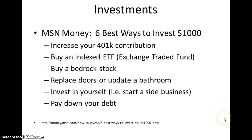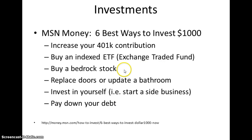Another question that can be answered with algebra is looking at investments. MSN Money gives six best ways to invest: contributing to your retirement, contributing to an exchange-traded fund (which is similar to a mutual fund), buying a bedrock stock with very low risk, updating your home — particularly doors and bathrooms — investing in yourself by starting a side business, or paying down your debt. But which is the best choice for you? It depends on the interest rate on your debt and the return rate on the stock or traded fund.